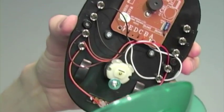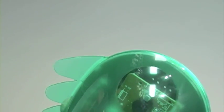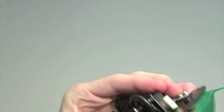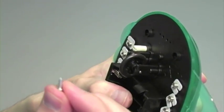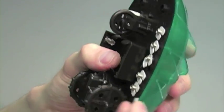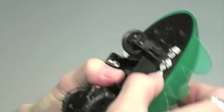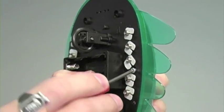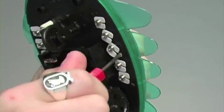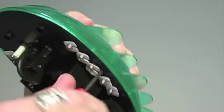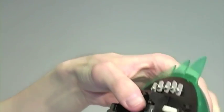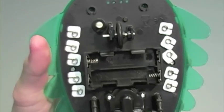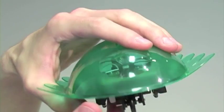Now we want to take the lid of our robot and attach using two of the smaller screws. And step five is complete.